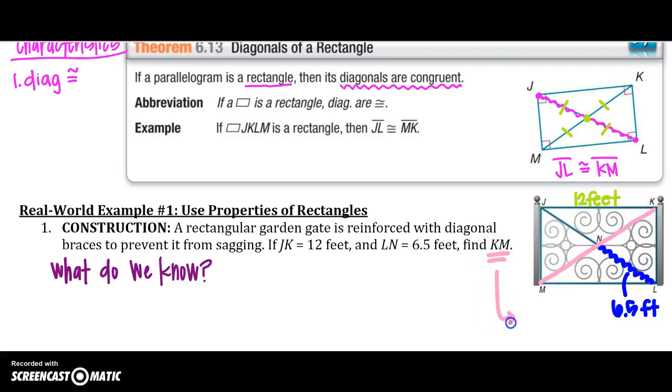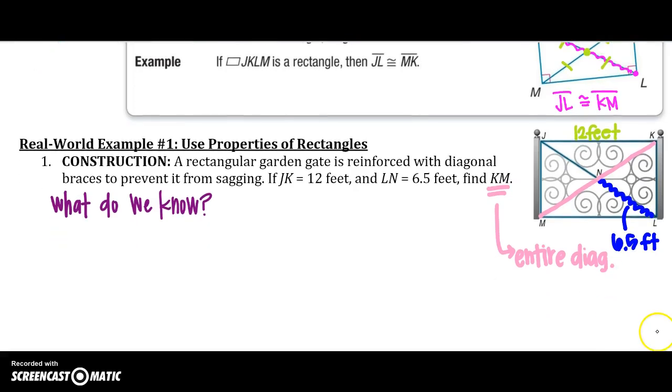So notice what KM is - it's the entire diagonal. So what do we know? Because it is a parallelogram, I know that opposite sides are congruent, so I know that ML is also 12 feet. So I know that JK equals LM, which also equals 12 feet.